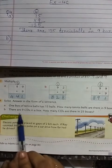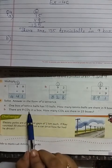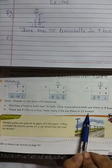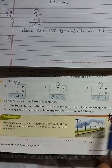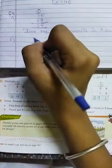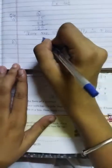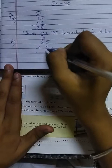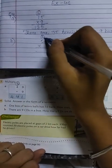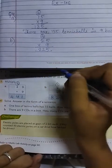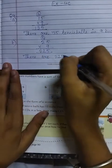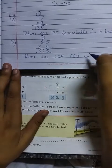Now question B, there are 9 CDs in a box. How many CDs are there in 25 boxes? So we will multiply 25 into 9. First arrange the numbers, 25 into 9. 9 fives are 45, 9 twos are 18, 18 plus 4, the answer is 225. There are 225 CDs in 25 boxes.